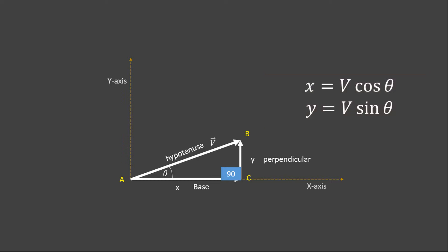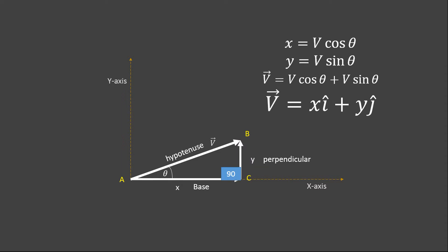The x-component shows the projection of vector V along the x-axis, while the y-component shows the projection of vector V along the y-axis. The vector V can be written in component form as V equals x·i plus y·j, where i and j are the unit vectors.